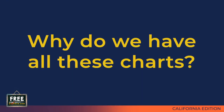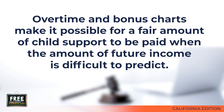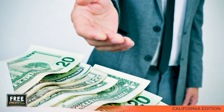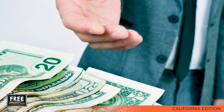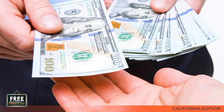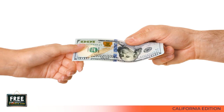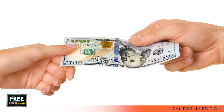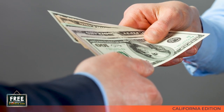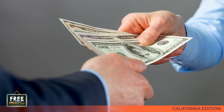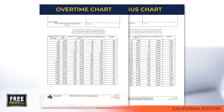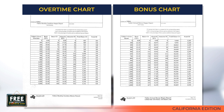Why do we have all of these charts? For some people, overtime, commissions, or bonus income will be the biggest part of their earnings — ignoring that income would result in an unfair support amount. Sometimes you just don't know how much someone is going to earn, which is especially true for self-employed people who may have high earnings one year and very little the next. The overtime and bonus charts make it possible to have a fair spousal support order even when it is difficult or impossible to predict future earnings. As long as you can establish a base salary that both parties are comfortable with, you can use these charts to capture a fair amount of support on any extra income.